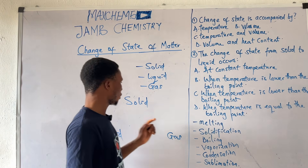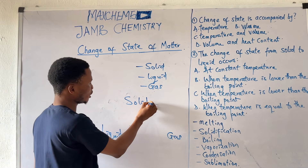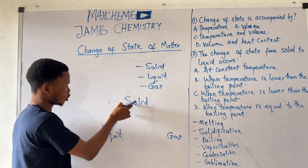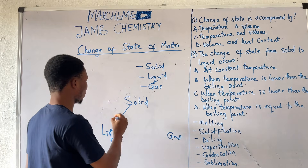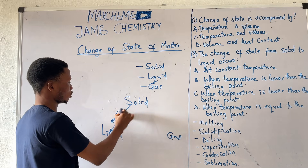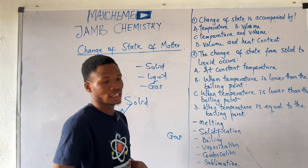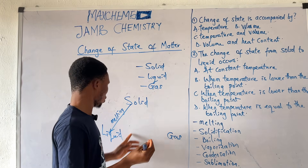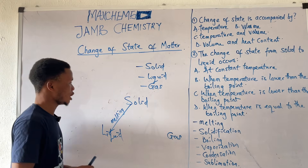The change of a substance from solid to liquid is known as melting. Take for example your ice — it is solid, and when we change it to liquid, we say that it has melted. So that is melting.